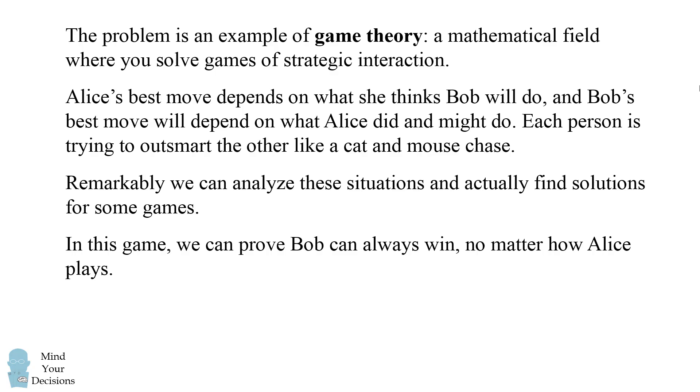In this game we can prove Bob can always win no matter how Alice plays. How can we do that? We will use an interesting concept called a graph coloring proof.